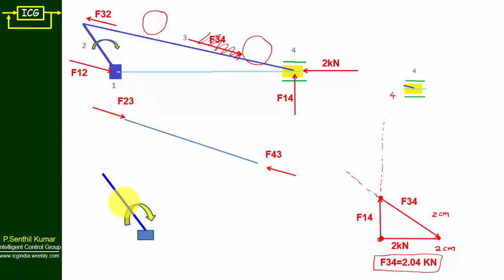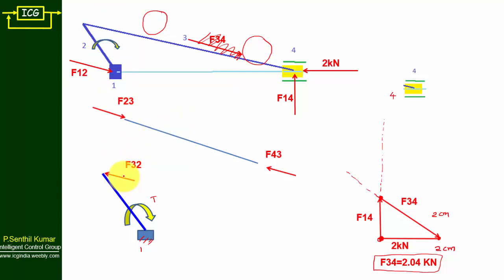Now the free body diagram for link 2, the crank. Here we have a clockwise rotation of torque. Point O is the fixed pivot, so there is no need to draw a separate free body diagram for link 1 since it is the fixed frame. Now copy F32 onto the crank diagram, then copy F12 parallel and opposite to F32.